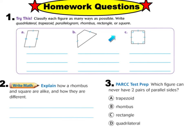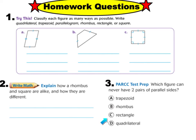For question two, explain how a rhombus and a square are alike — what do they have in common — but also list how they're different: what makes a rhombus a rhombus and what makes a square a square. For question three, answer A, B, C, or D: which figure can never have two pairs of parallel sides?